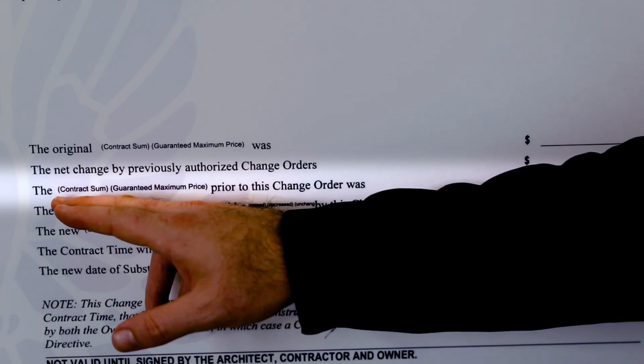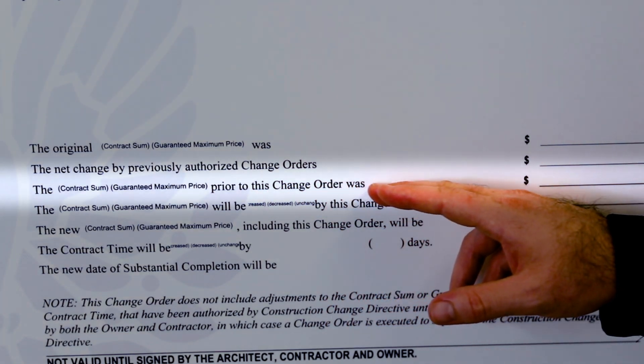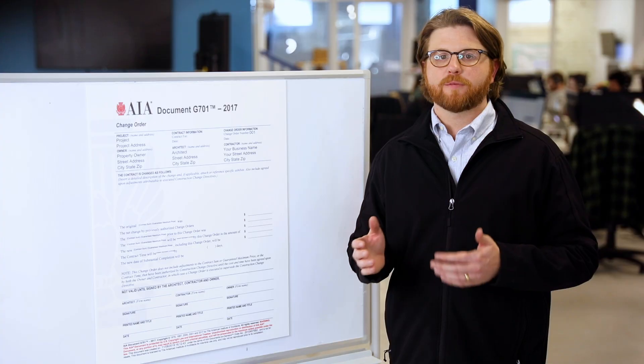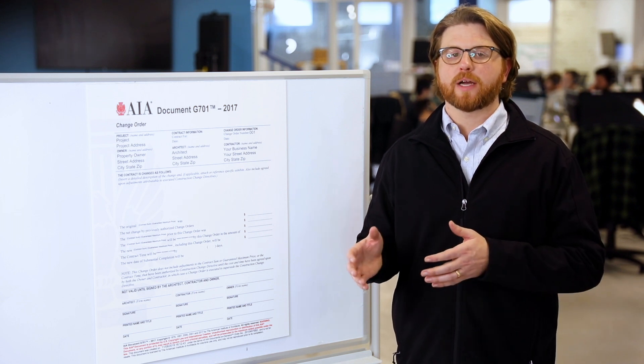Now let's look at the contract sum prior to this change order. To get the right figure here, simply add the two lines above. This figure is the total sum of the original contract value and the net change by previously authorized change orders. If you have the previous change order handy, the amount in this section will match the new contract sum from that prior document.